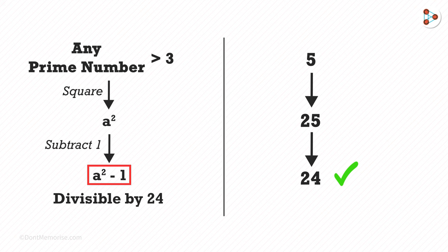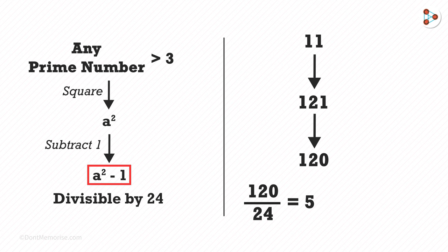Take another prime number, say 11. Its square is 121. Subtract 1 from it and we obtain 120. 120 divided by 24 is 5, and the remainder is 0, which means this is also divisible by 24.